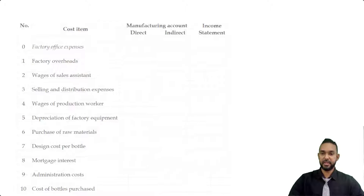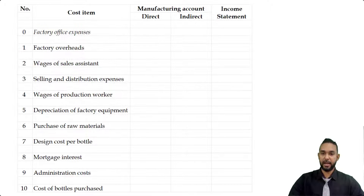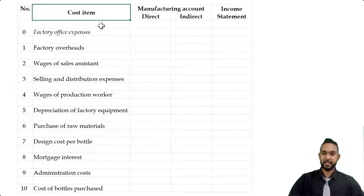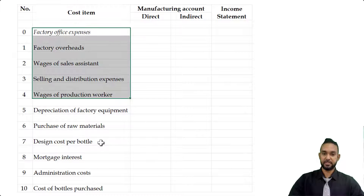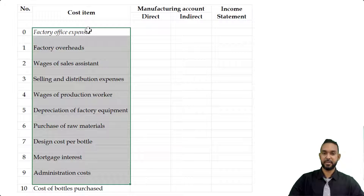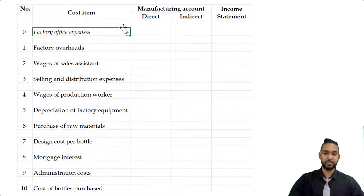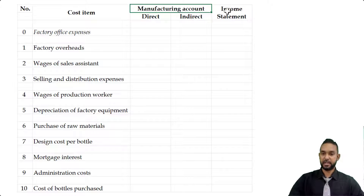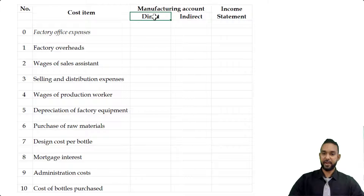I recreated the handout, and as you can see, you have the item number and the cost item — there are 11 items, but the first one was done as an example. Then you have the manufacturing account classification or income statement classification, and under manufacturing you have either direct or indirect.